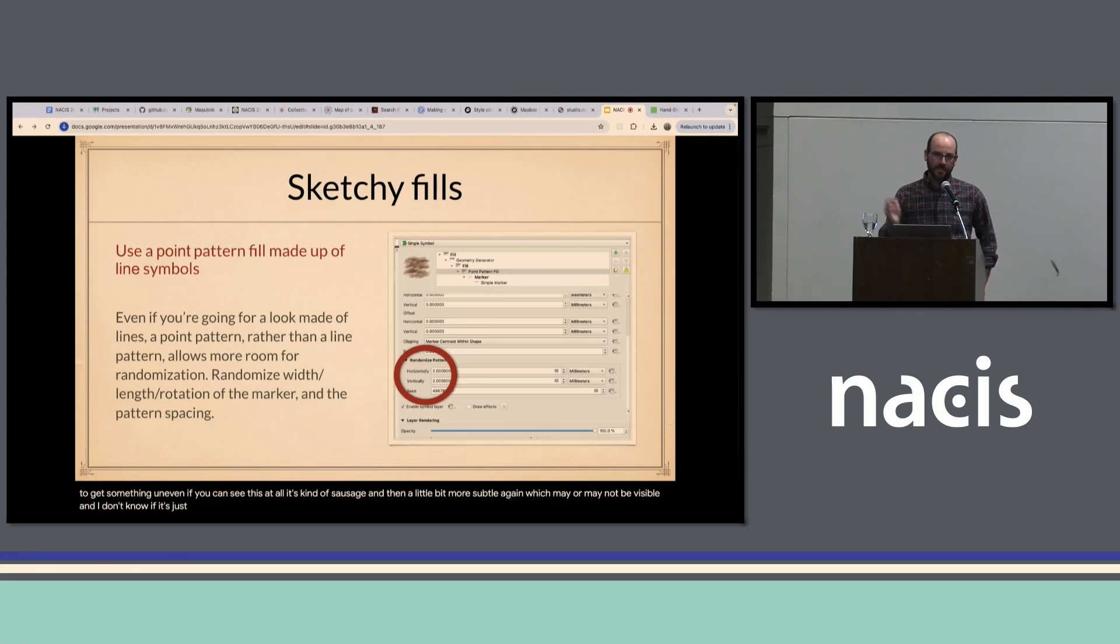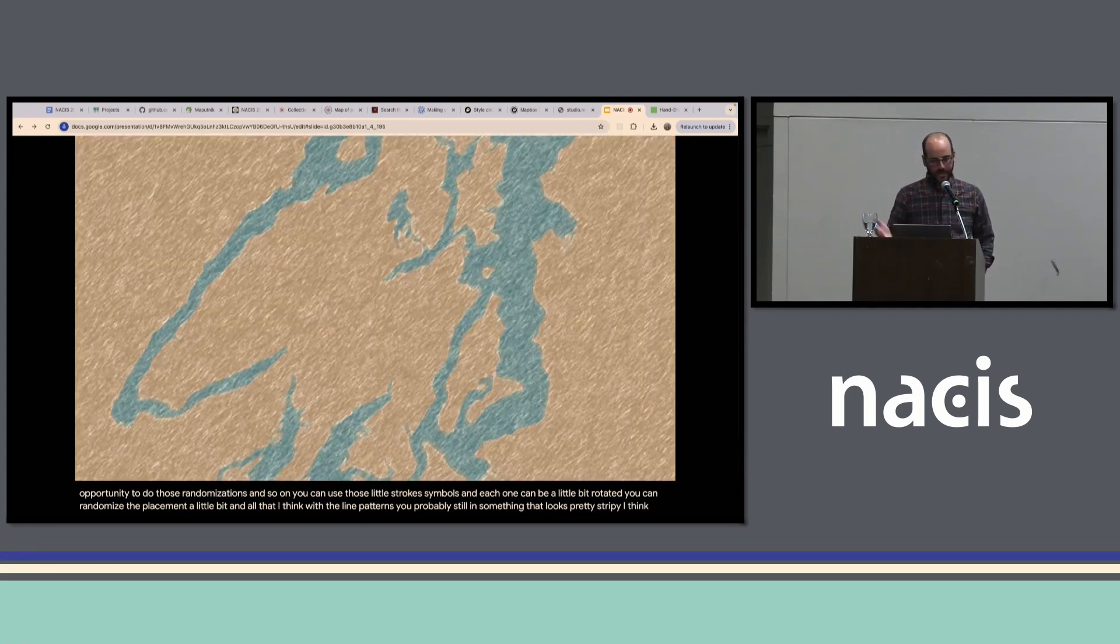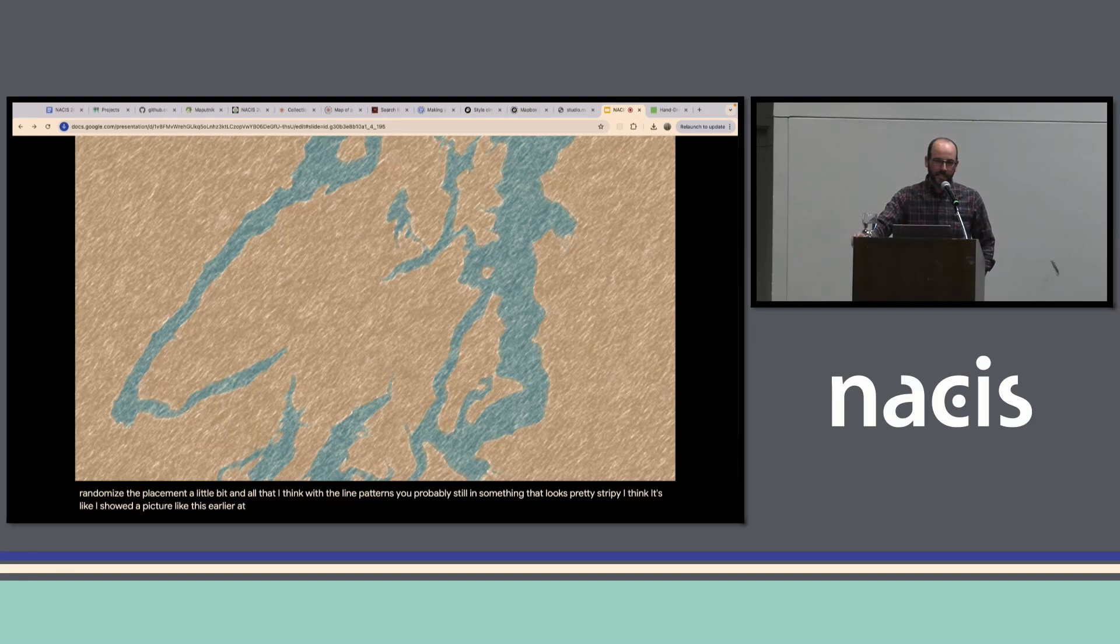If you can see this at all, it's kind of sausagey and then a little bit more subtle again which may or may not be visible. And I don't know if it's just me, I often want to make things look kind of scribbled in and for this I want to advise you can use point pattern fills rather than line patterns even if you're going for something that looks kind of like lines because the point pattern allows you more opportunity to do those randomizations and so on.